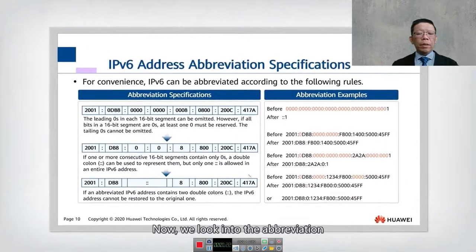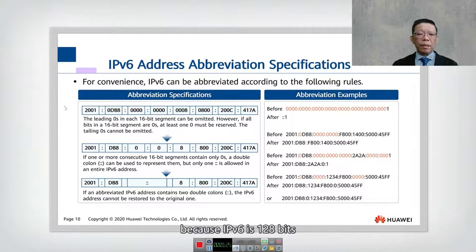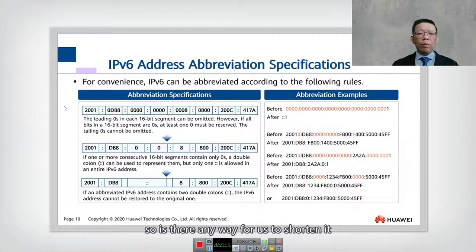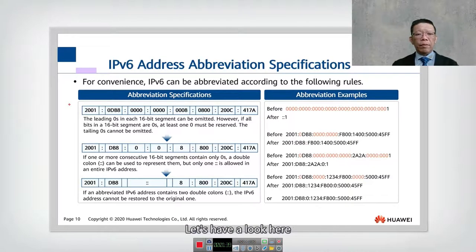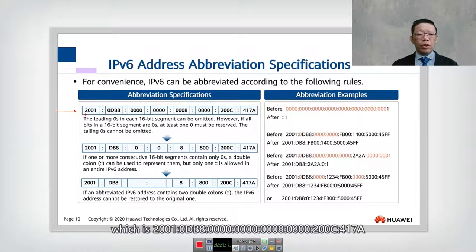Now we look into abbreviation, because IPv6 is 128 bits, so sometimes it gets really long and very complex. Is there any way to shorten it? Yes, there is. This slide shows you how you can abbreviate an IPv6 address. Let's have a look at this example, where we have a full IPv6 address.